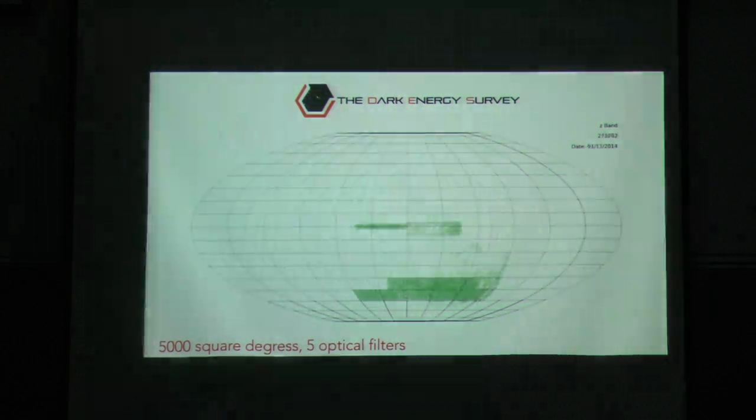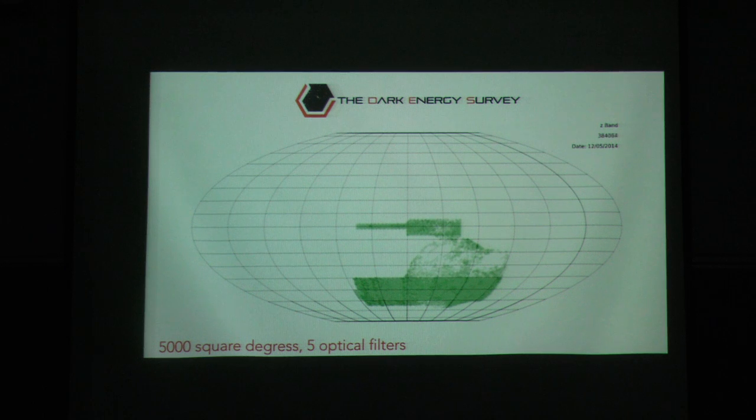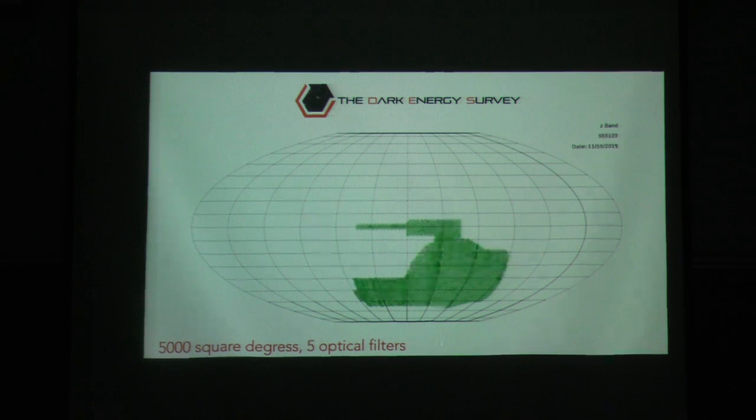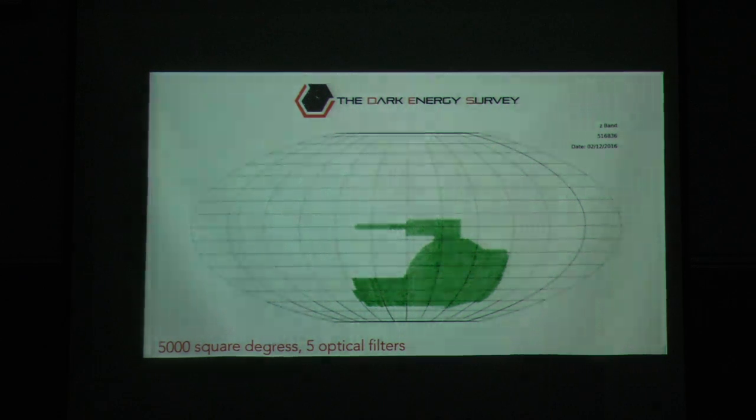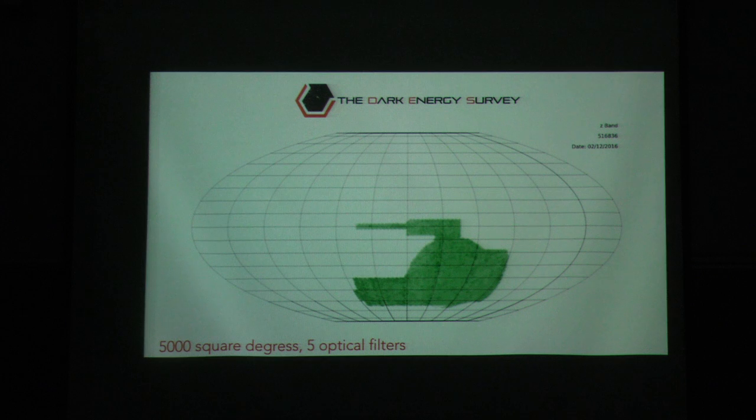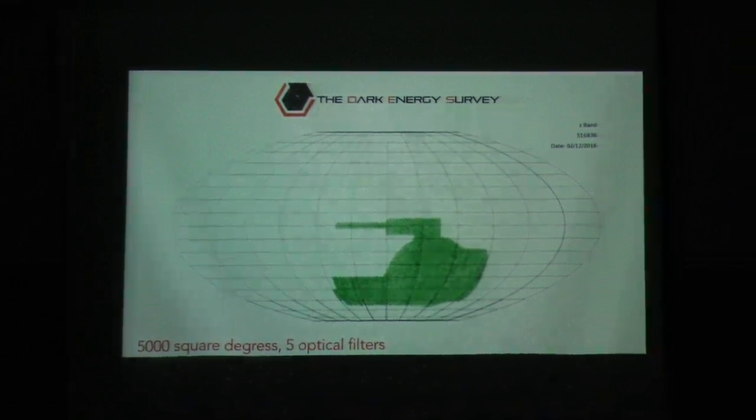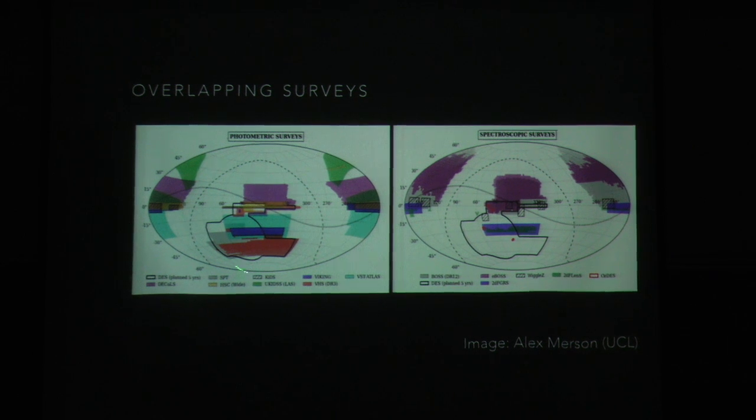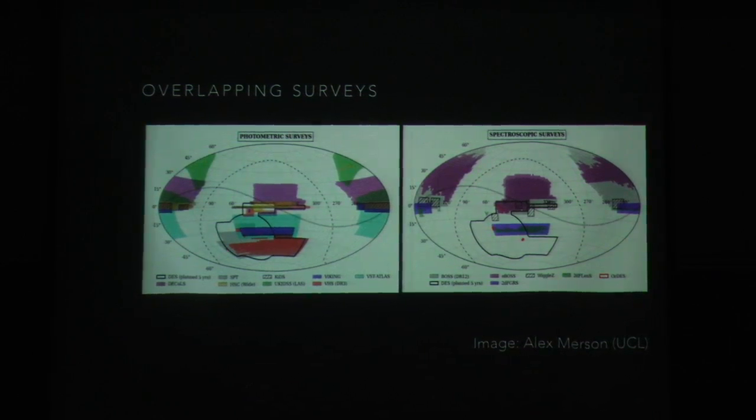So, we are now in the fourth year of a five-year survey, or we've completed fourth year of observing. This is the area of the sky that we cover, and it shows the sort of tiling pattern that went on over the first three years. It's known as the tank for obvious reasons. Compared to other surveys, the reason that this region was chosen is because there's a wealth of data at other wavelengths. The barrel of the tank is the stripe 82 from Sloan. And I'll bring your attention to these little red points here. Those are the fields that we're doing time-lapse photometry in so that we can look at variable objects. They're known as the supernova fields.